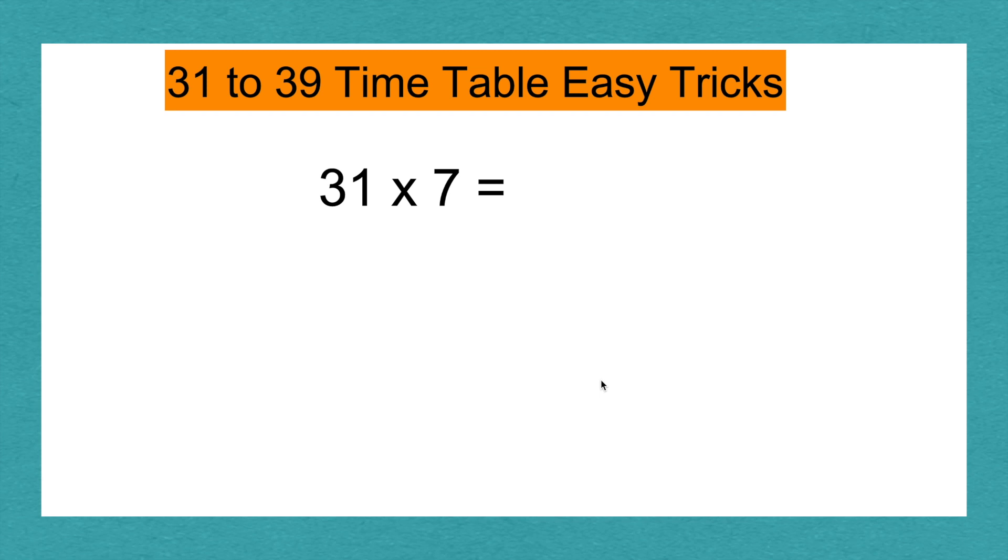We will solve 31 times 7 with our split formula first. Circle 31 and split it by its 10 and 1's place. Then multiply it by 7 because 7 is the other number, 30 times 7.